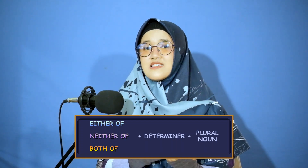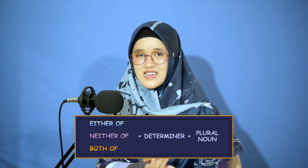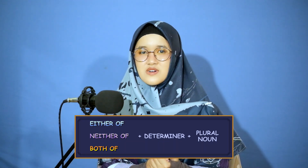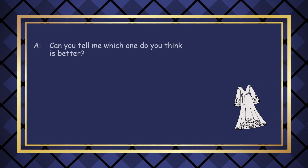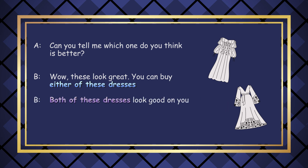'Either' and 'neither' are used with singular nouns, but if you are describing plural nouns you can add the word 'of' before them. For example: 'You can buy either of these dresses.' 'Both of these dresses look good on you.' So 'either of' and 'both of' are followed by a determiner plus a plural noun.